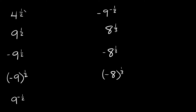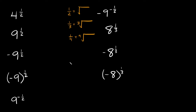These are probably not as bad as you think. Whenever you see something raised to the one-half power, that is the same thing as taking the square root of that number. If you see something raised to the one-third power, that's the same thing as taking the cube root. One-fourth power is the fourth root, one-fifth is the fifth root, and so on. So 4 raised to the one-half power is the same as the square root of 4, which equals 2. And 9 raised to the one-half power equals the square root of 9, which is 3.